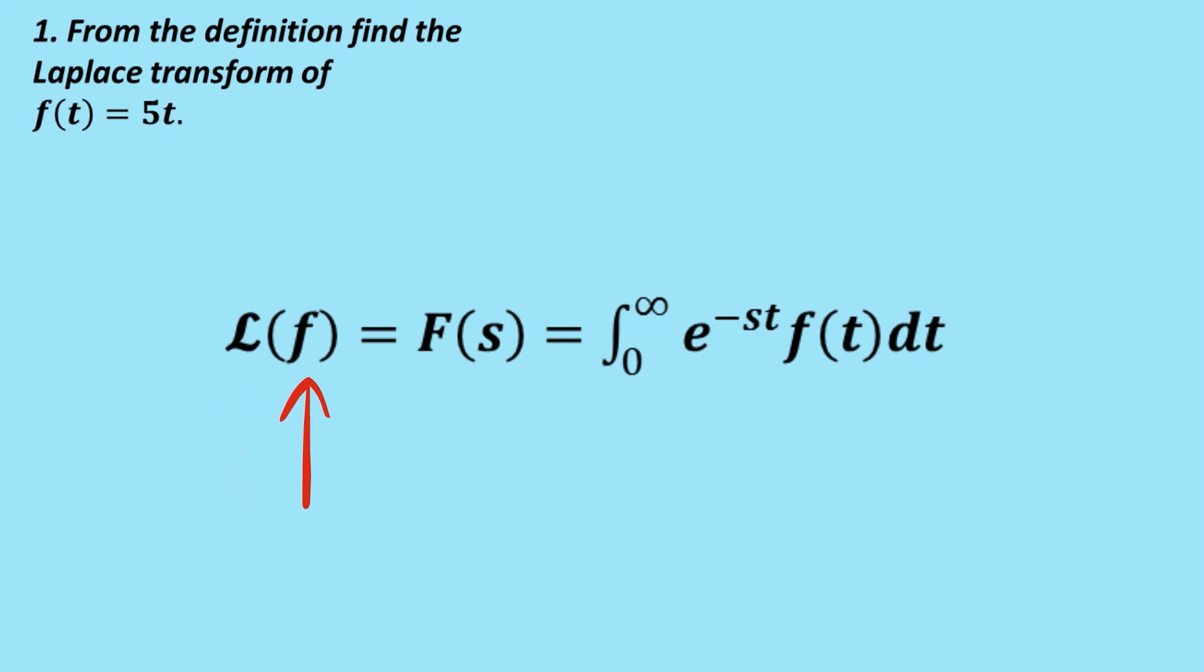And what we'll get out of it is this function F of s. So we use the big F to indicate that it's been transformed. And you can see that the t, which we had before, is now, now we've got an s. And the formula is just shown here. So you just take the integral between 0 and infinity of e to the power of negative st times f of t dt.